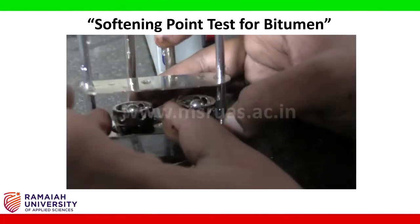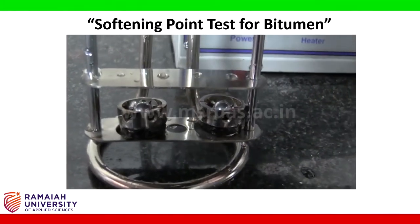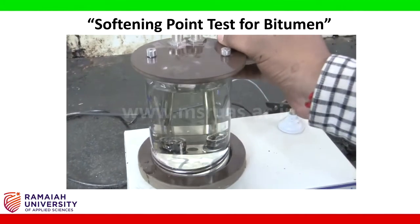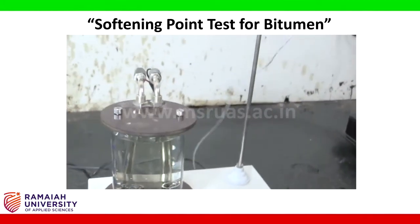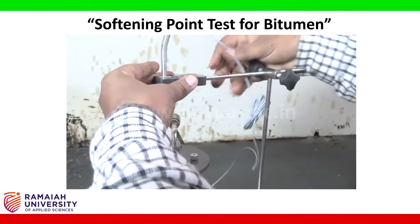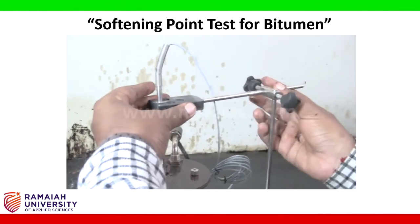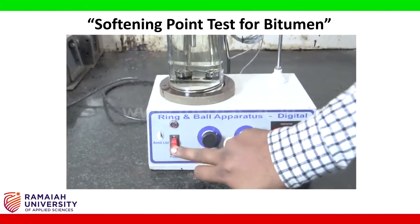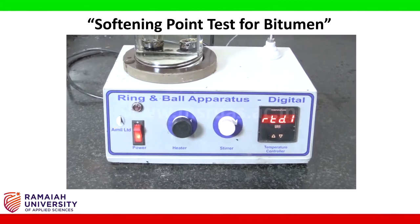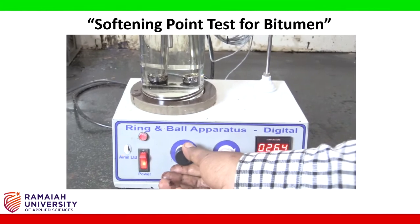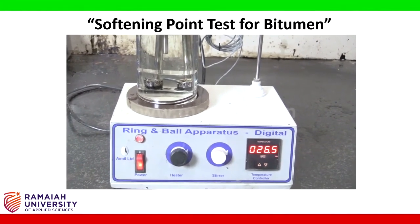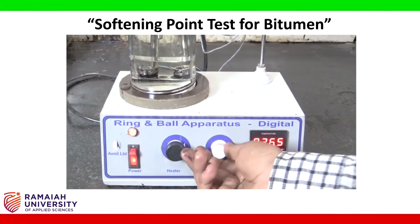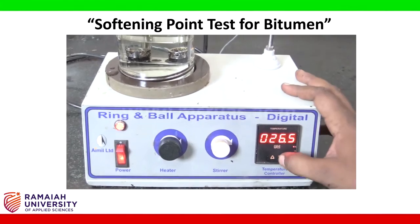The two ring and ball assemblies are inserted into the provisions on the frame. The total assembly is inserted into the water beaker and the digital thermometer sensor is inserted into the system. After inserting everything, we turn on the equipment and start heating. The heating rate should produce a rise of 5 degrees Celsius every minute.